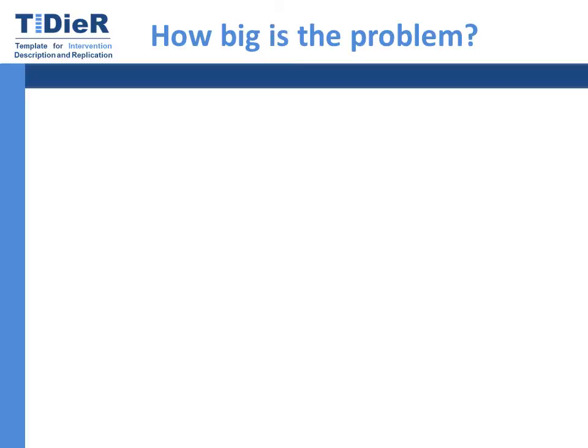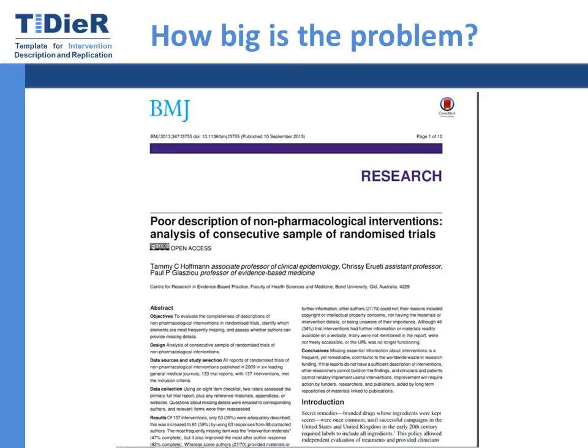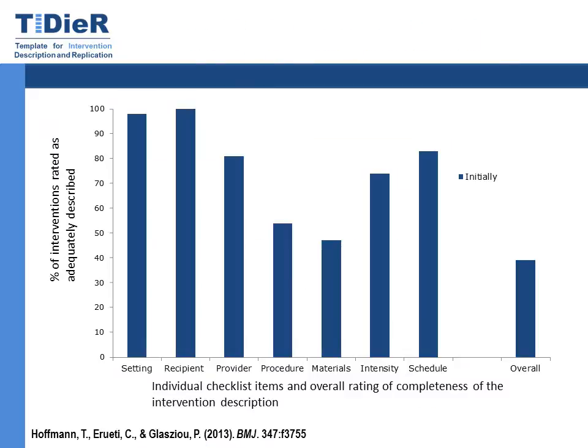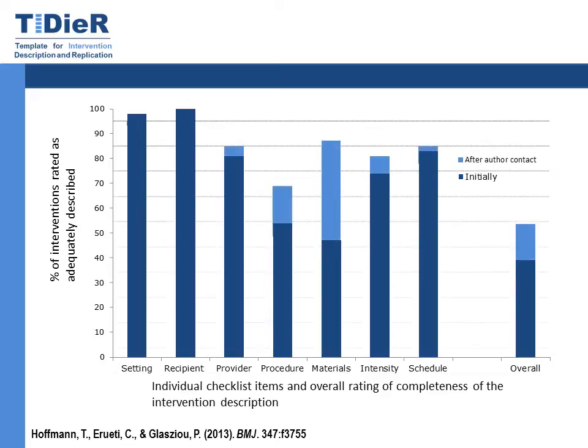The problem is widespread. A recent study of 137 non-drug interventions found that only 39% of interventions were described adequately in the primary paper or references, appendices or websites. And after contacting authors of the trials for additional information, this increased, but only to 59%.